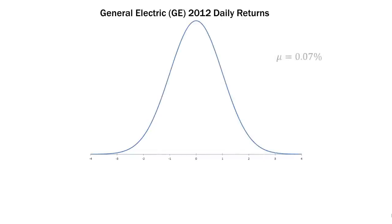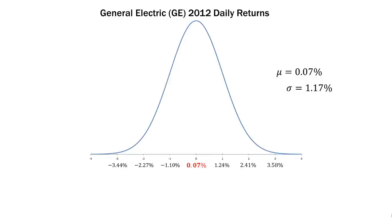For GE, the average daily return was 0.07% — compared to Apple's 0.11%, so slightly less, but still positive. The standard deviation is 1.17%, versus Apple's 1.84%. You should already see a difference in daily return and more importantly in standard deviation — in terms of volatility. We put these on the number line: the mean at Z = 0 is 0.07%, then we add and subtract the standard deviations to get the actual percentage values.